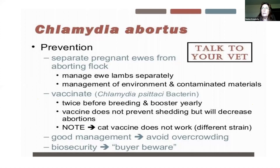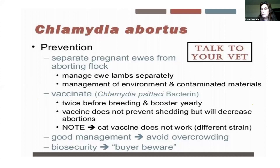Additional management techniques that can be helpful include separation of ewe lambs from the adults, management of the environment, and picking up and discarding those placentas so other animals don't have the opportunity to eat them or spread contaminants. A note for those with companion animals — we do have a chlamydia vaccine used in cats, but there is no cross protection between the two types of chlamydia. Don't try to use your cat vaccine to vaccinate your small ruminants against chlamydia.